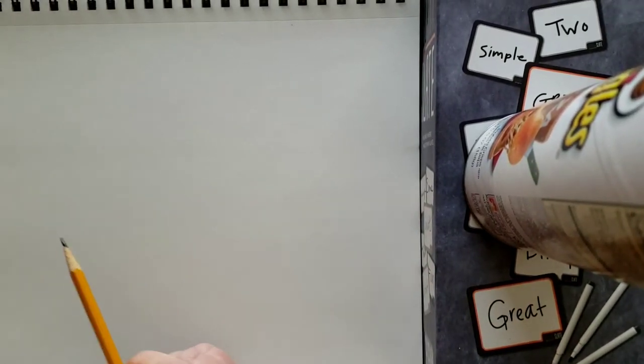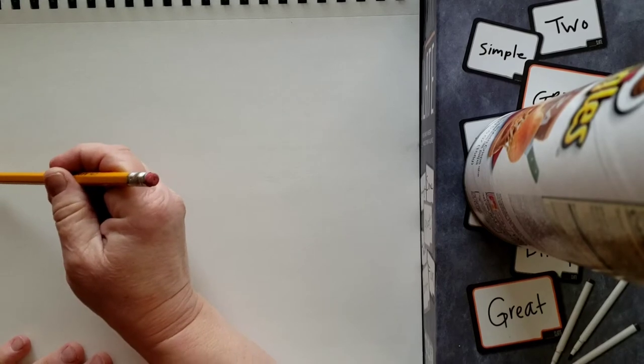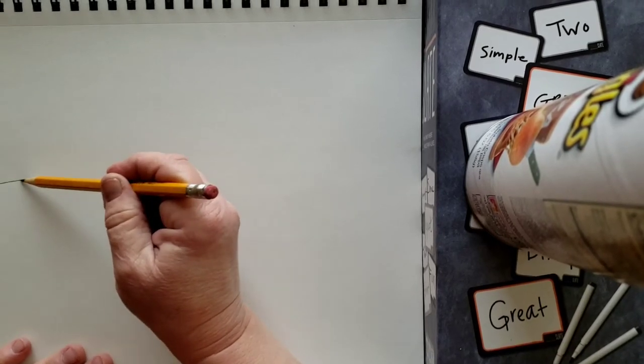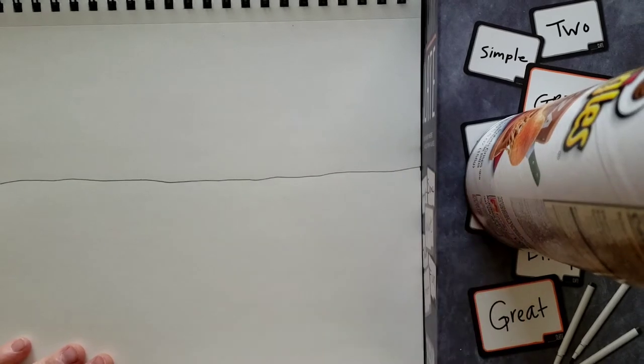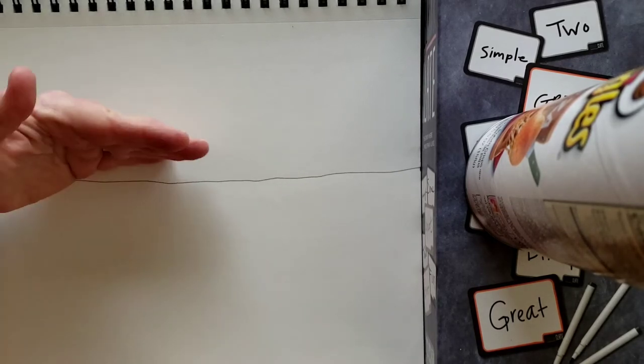All right, we're going to be doing a landscape. And one thing I wanted to teach you about is if you just draw a line across the middle of your paper, that is called a horizon line. And the horizon separates the land from the sky.